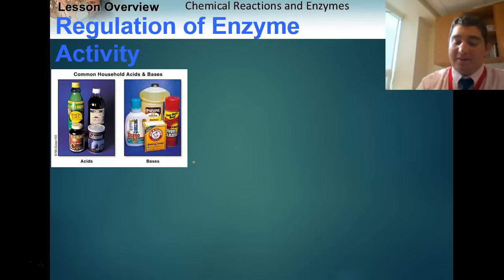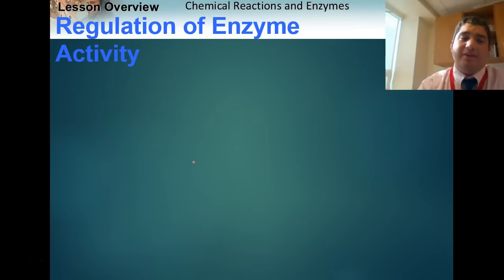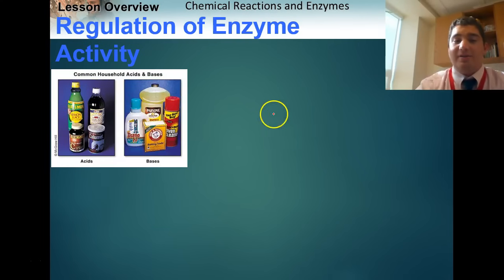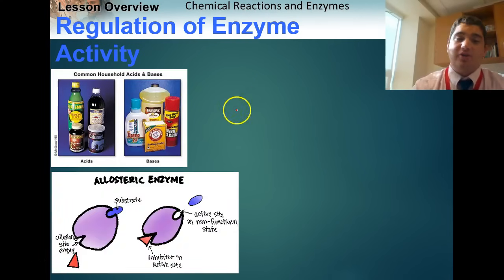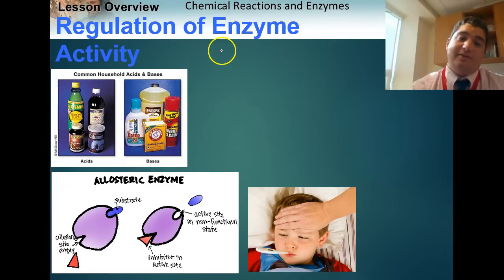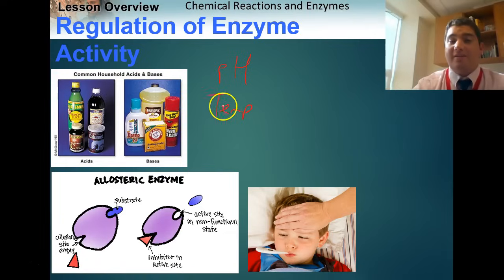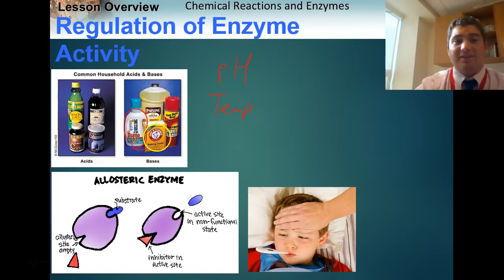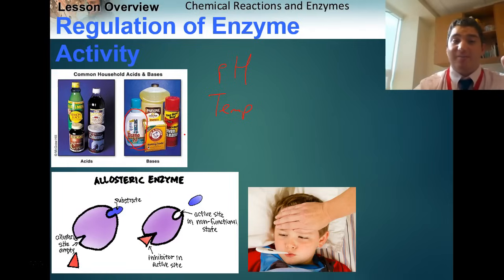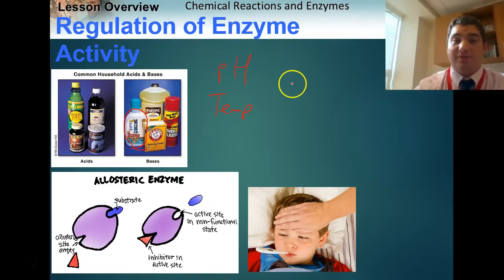Enzymes can be affected in our bodies in several ways. Enzymes are greatly affected by pH and by temperature. If the pH of your body changes — say you accidentally drink bleach — you'll get sick because those enzymes will change shape and stop working. Since shape determines function, if an enzyme changes shape it can no longer function properly.